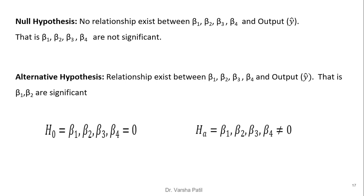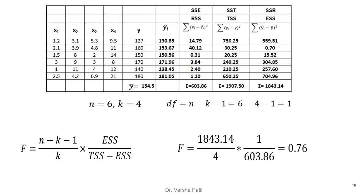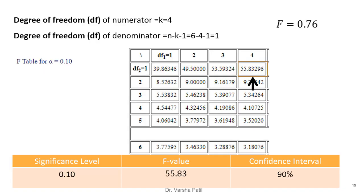We state the null and alternative hypotheses as in previous problems. Creating the table with the first five columns given, from the regression equation we calculate y-cap, then RSS, TSS, and ESS using the average of y. Putting values into the formula gives the answer 0.76. The degree of freedom for the numerator is 4 and for the denominator is 1. At the intersection of 4 and 1, the F-table value is 55.83, which is much greater than our calculated 0.76.